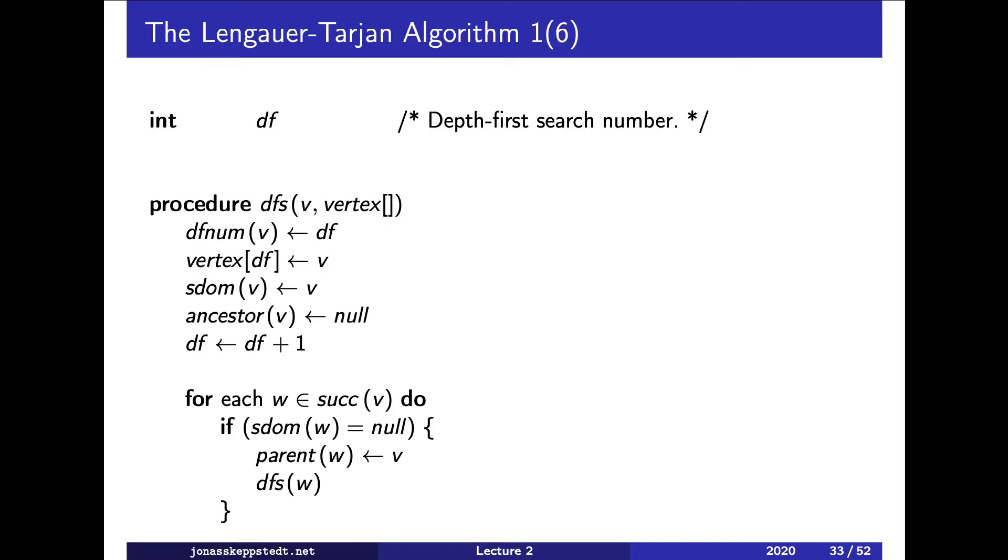Then we set the semi-dominator to itself just to have something there and the ancestor to a null pointer. We use the semi-dominator to check if we have already visited the node or not.